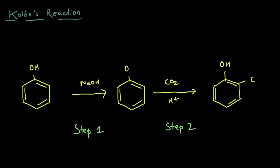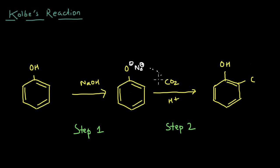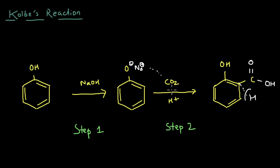To bring everything together: we started the Kolbe-Schmitt reaction with phenol. The first step used NaOH as a base to make phenol more reactive as a phenoxide anion, so it could react even with a weak electrophile like CO2. In the second step, the sodium directed the CO2 oxygen toward the ortho position, the electrophilic carbon bonded to the ring, the hydrogen was kicked out to restore aromaticity, and finally adding H+ converted the O-negative to COOH — taking us from phenol all the way to salicylic acid.